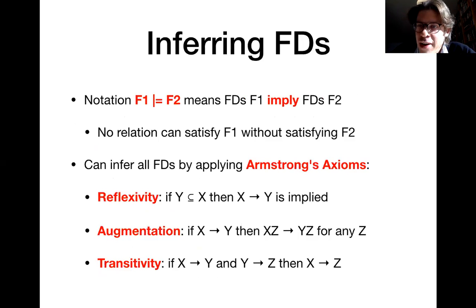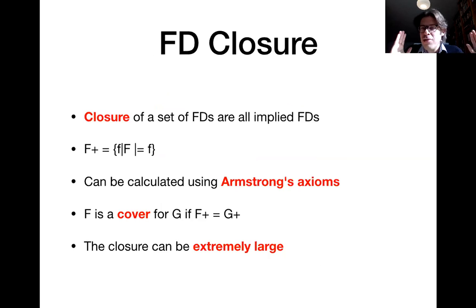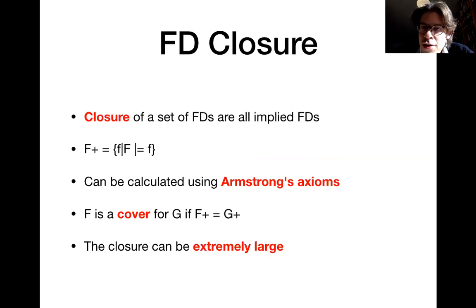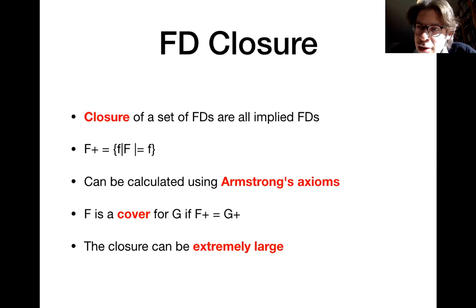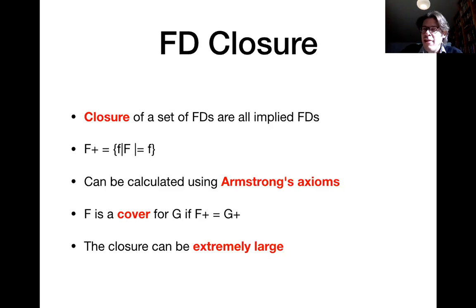We discussed Armstrong's axioms, which are a set of rules that allow you to infer new functional dependencies from given ones. If you apply Armstrong's axioms often enough, you end up with the closure for a given set of functional dependencies, which is essentially all the FDs that can somehow be inferred from the original ones. The problem with those closures is that they are extremely large, so it is typically impractical to calculate one. Going forward, we'll discuss how to narrow down our scope and not infer all FDs, but only those based on the same attributes on the left-hand side — one way of narrowing down the scope.